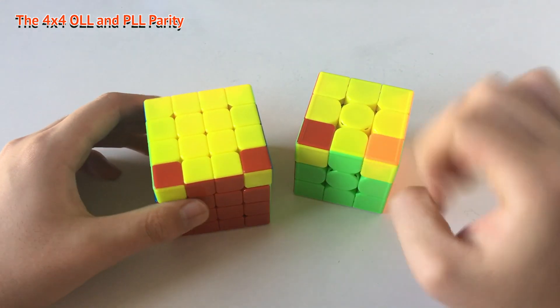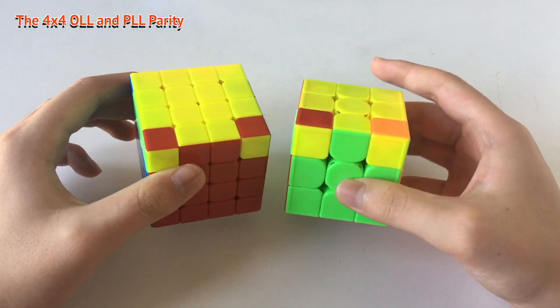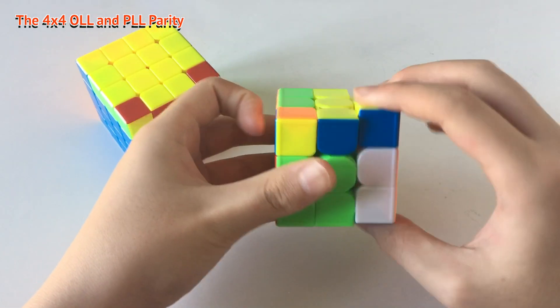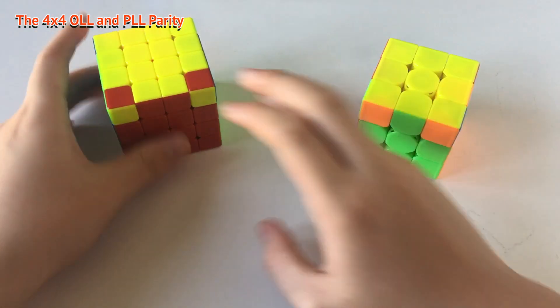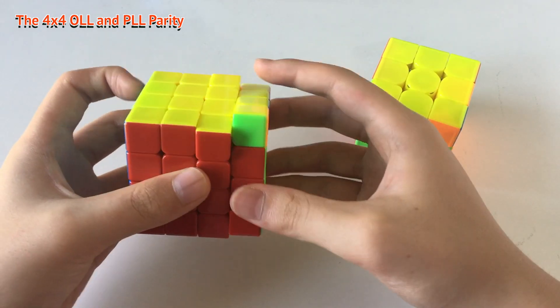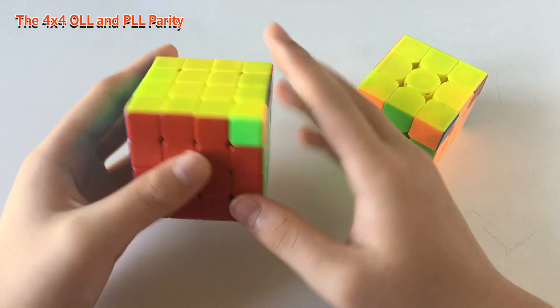As you can see, now on the 4x4, we have a case similar to this case on the 3x3. So you can do the algorithm for this case on the 3x3, the same way on the 4x4, like that. And that will solve the OLL.